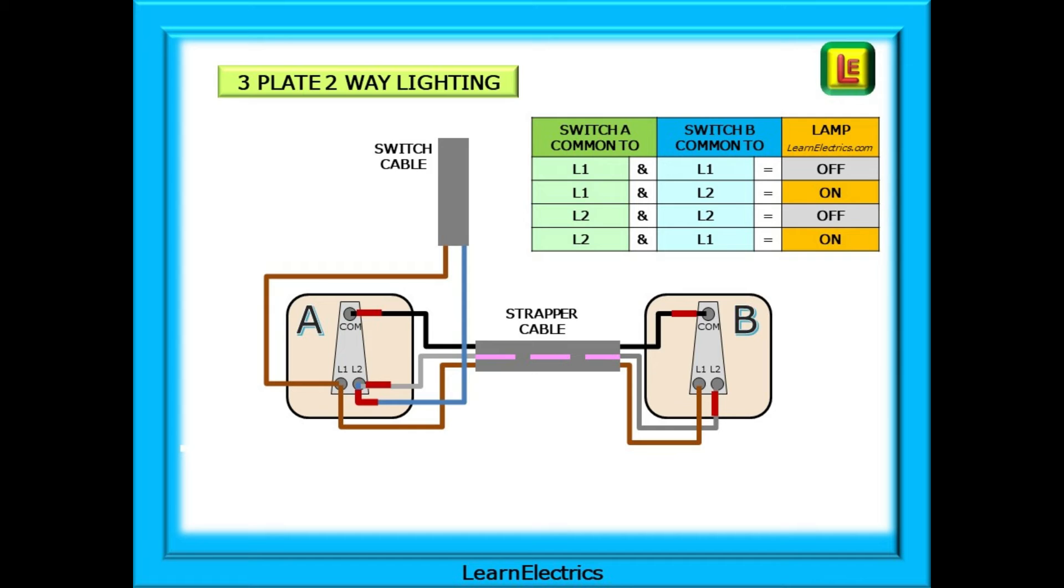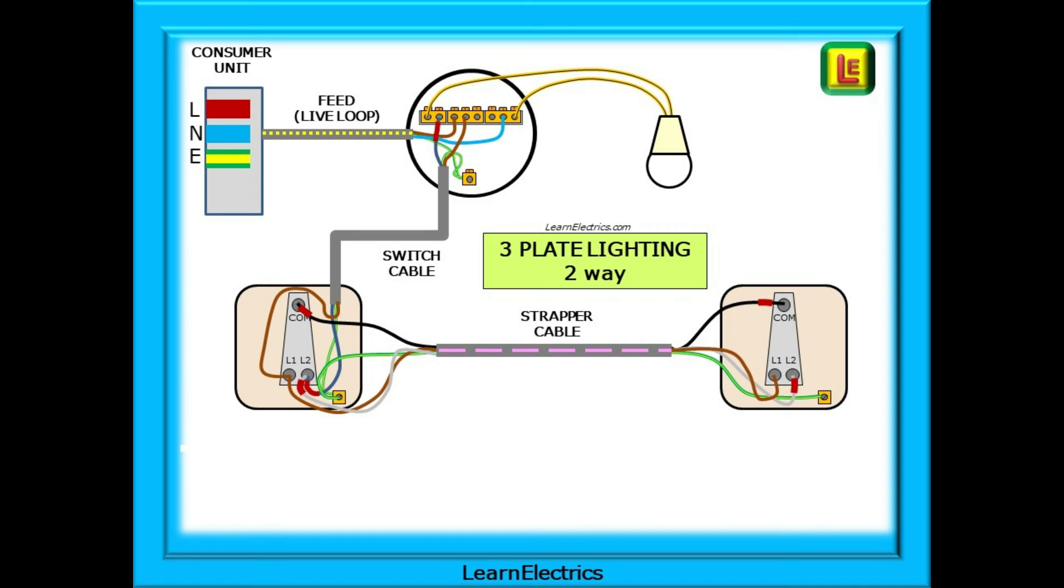Note that the blue wire is not a neutral with this system and should have brown sleeving showing at each end to indicate that it is a phase conductor. And this is a completed three-plate lighting circuit wired as a two-way with all the wiring in the correct positions and with the black and grey conductors marked with brown sleeving. Pause the video and take a moment to understand it.